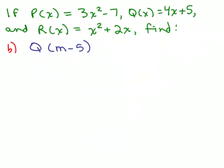Part B says to find Q(m - 5), so this time we look up at the function Q up here. Q(x) is 4x + 5, and we're going to replace x with m - 5.